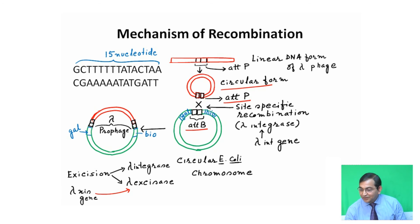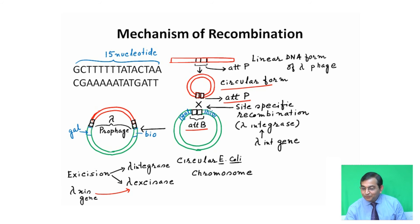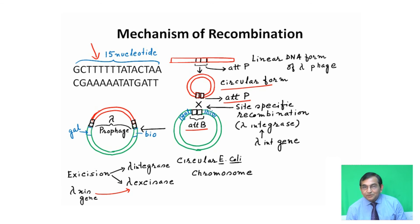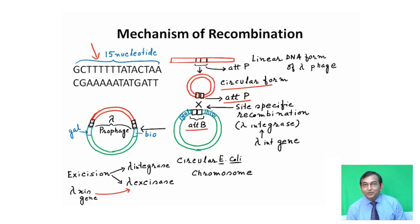Attachment site P and attachment site B have an identical sequence — that is, 15 nucleotide sequences which are identical in both attachment site P and attachment site B. This 15-nucleotide site is located between the two genes, gal and bio, that is the galactose and biotin genes.